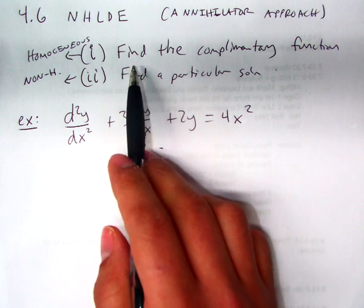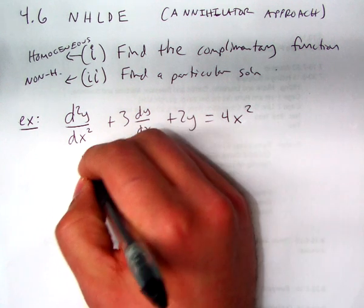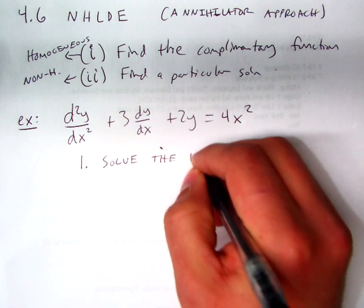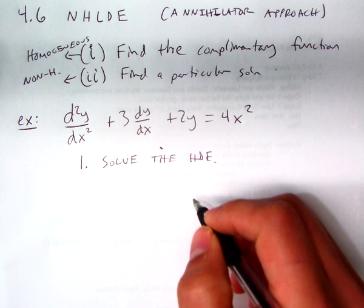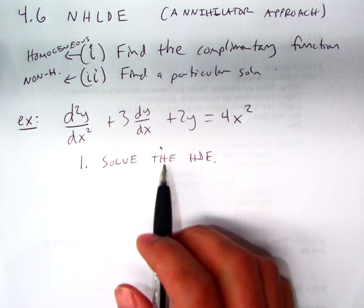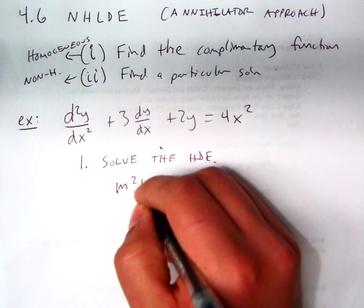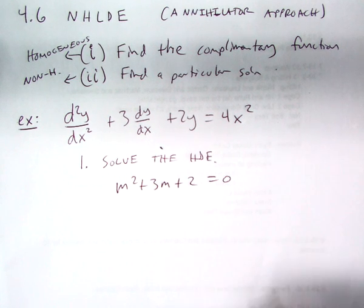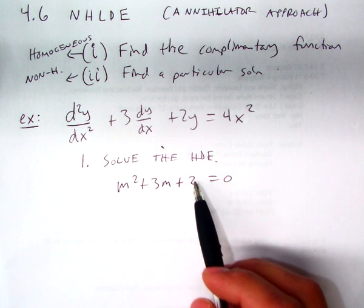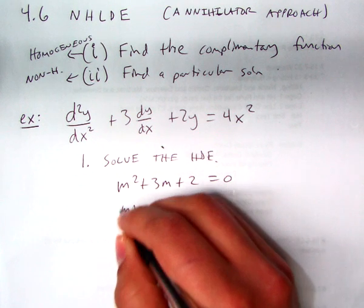So the first thing we're going to do is find the complementary function, which is the solution to the equation if it were actually a homogeneous equation. And if that is the case, then this differential equation has an auxiliary function. So the characteristic or auxiliary equation corresponding to this differential equation is m squared plus 3m plus 2 equal to 0 if it's homogeneous. And then we solve for m, as we have done previously.